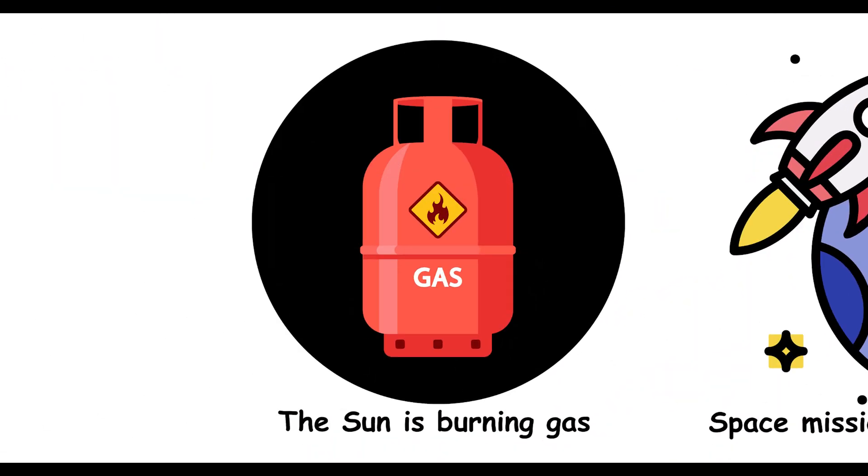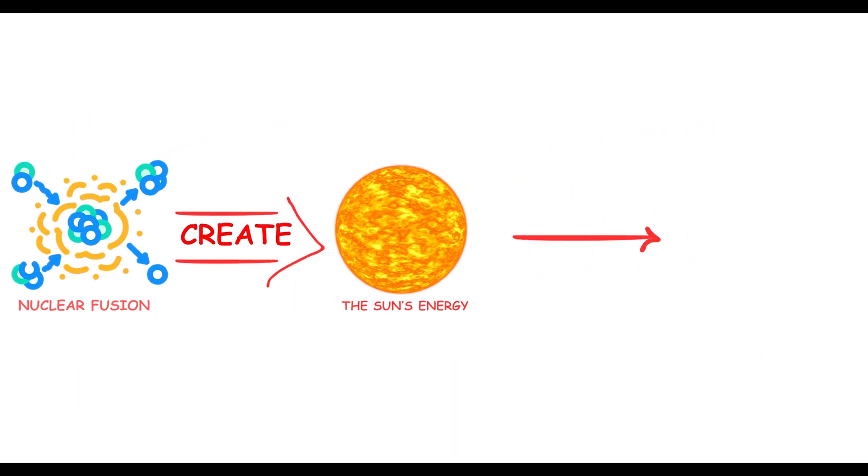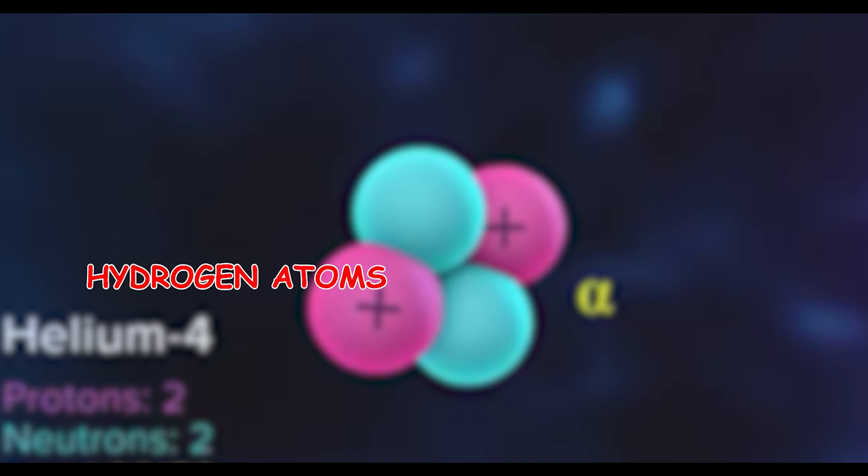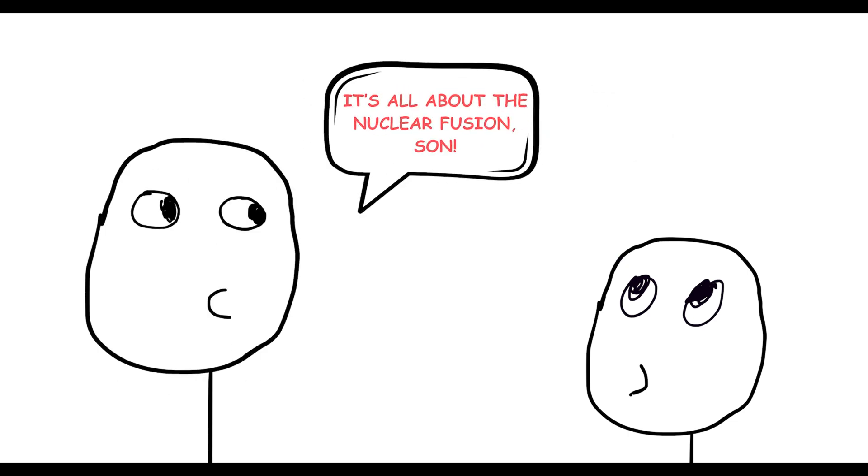The sun is burning gas. Did you know the sun isn't burning gas? It's actually fusing it. The sun's energy comes from nuclear fusion, not combustion. Hydrogen atoms fuse to form helium, releasing immense energy. So, the sun's power is all about fusion, not fire.